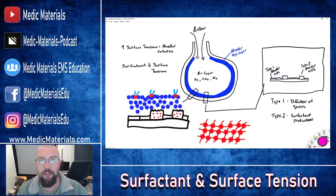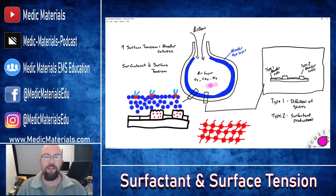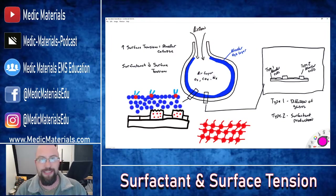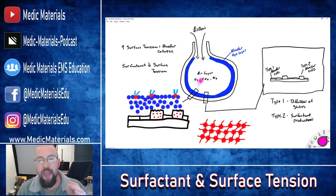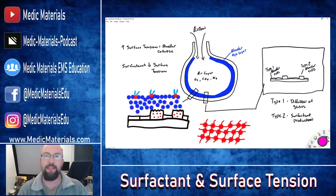We have this air layer, and the first misconception is that it's just filled with oxygen. It's not — it's also filled mostly with nitrogen. 79% of the alveoli is filled with nitrogen, and this, along with the surfactant, allows the alveoli to stay open.